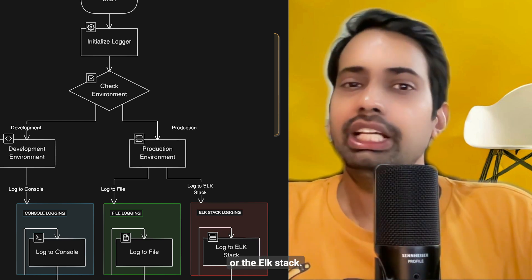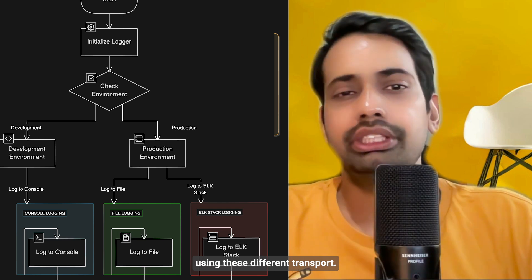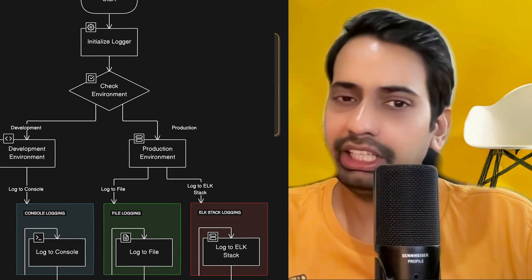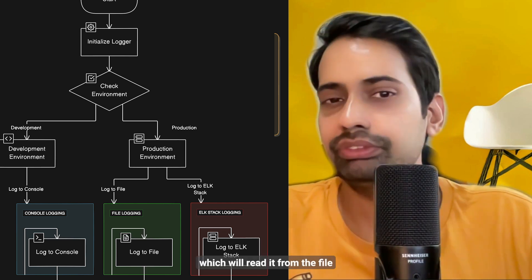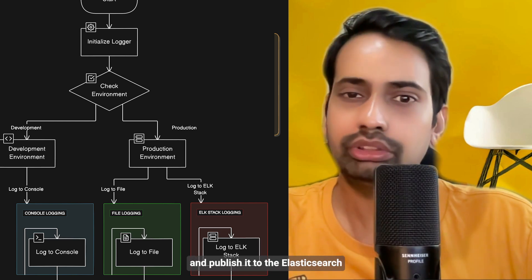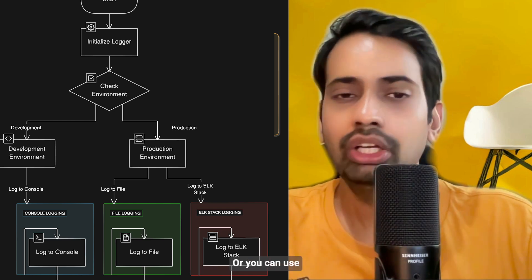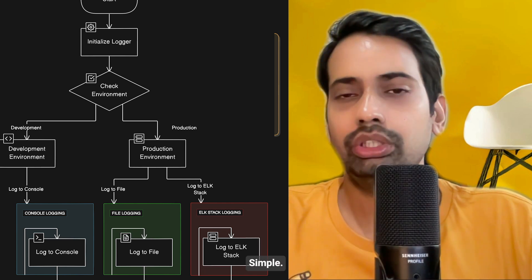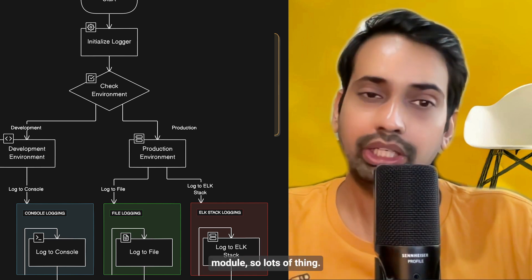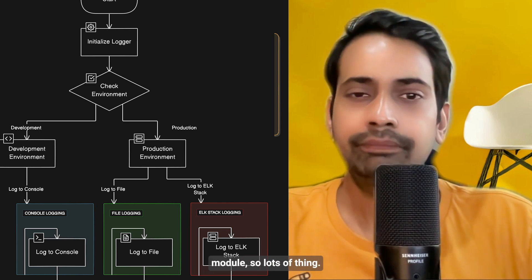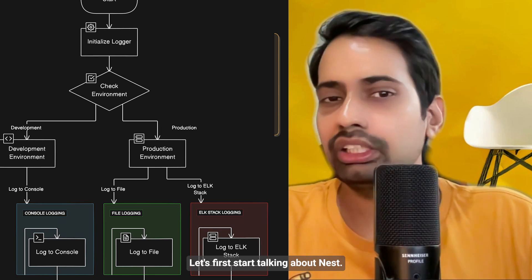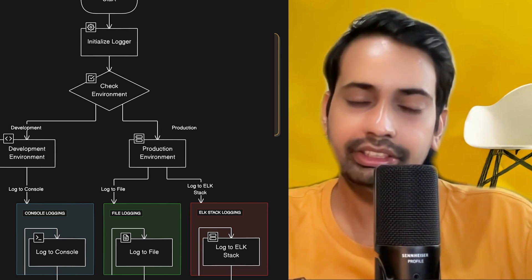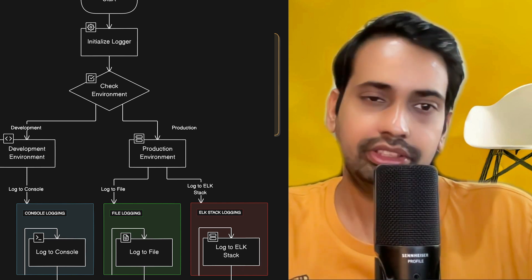With the ELK stack, you can use different transports. You can publish logs to Filebeat, which reads from the file and publishes to Elasticsearch through Logstash, or you can use the Logstash transport through Winston. Winston is a popular Node.js module. Let's start talking about NestJS logging and the different ways to get it right.